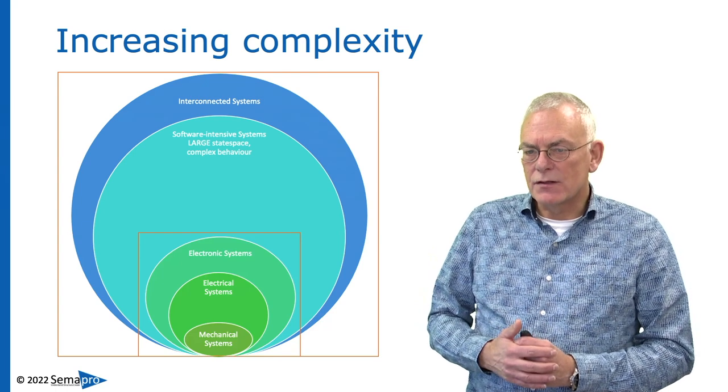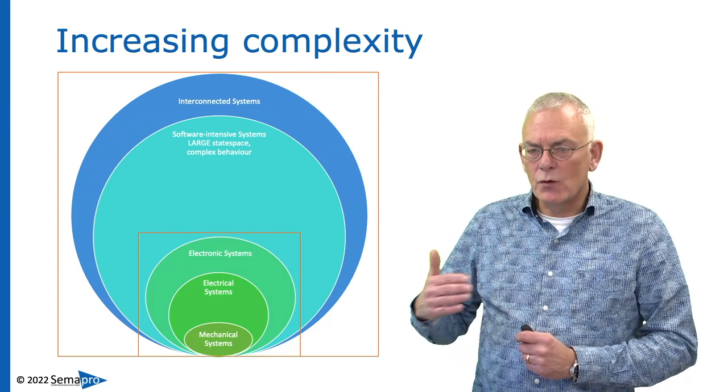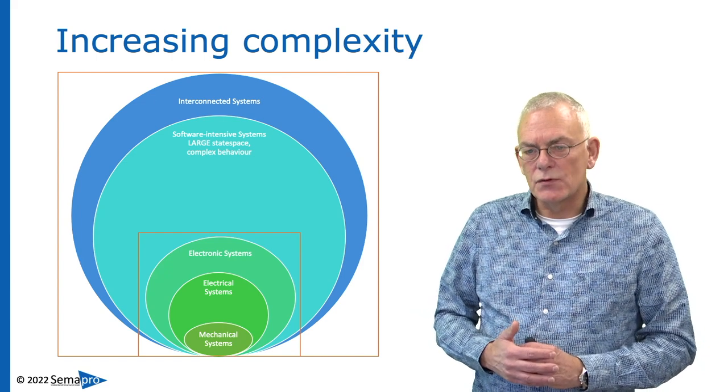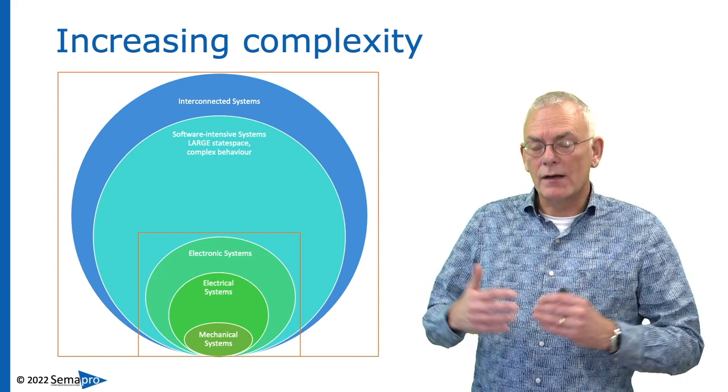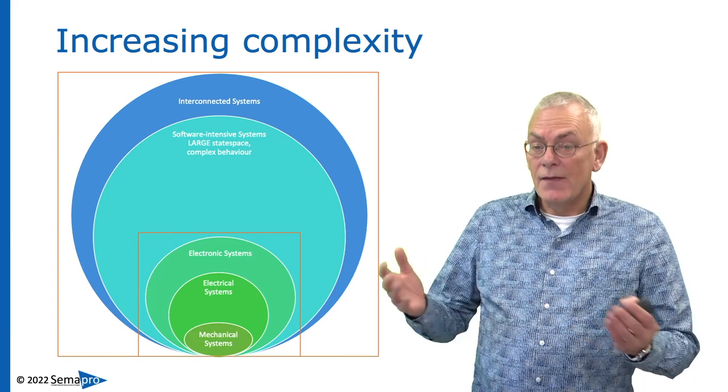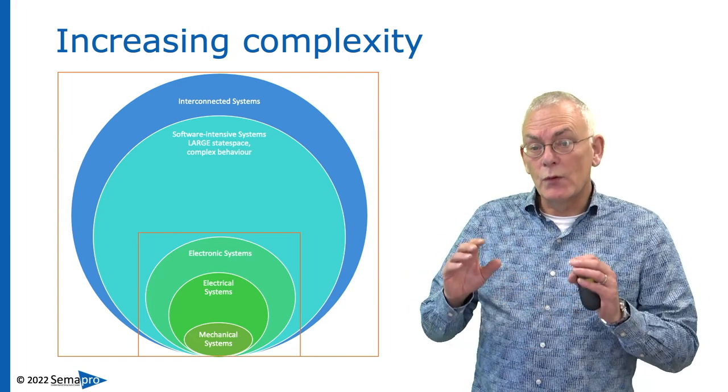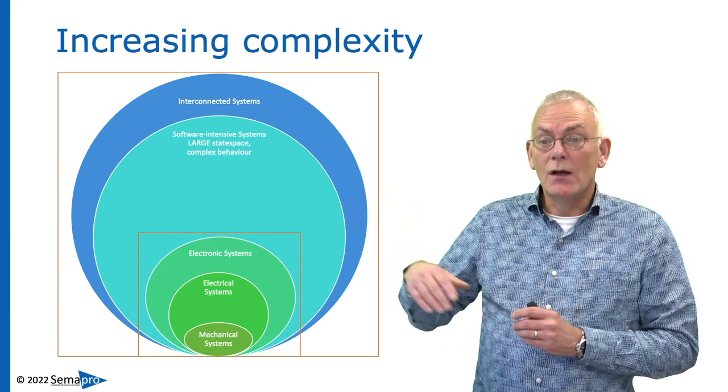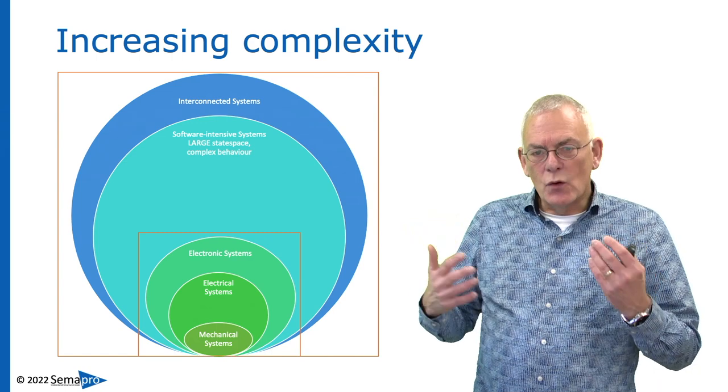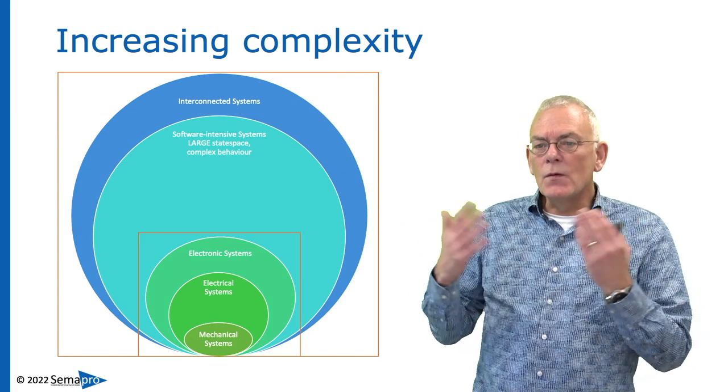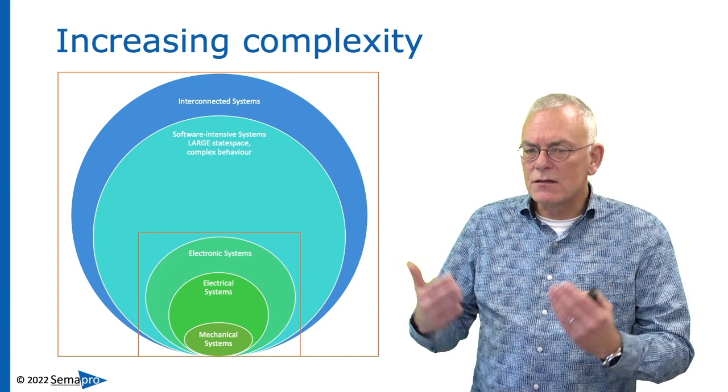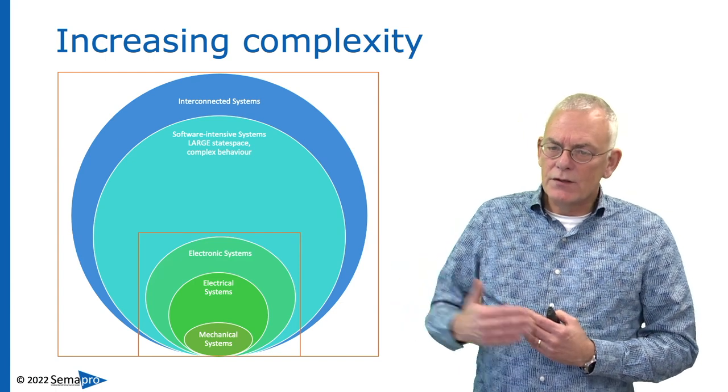Nowadays, most systems are software intensive. That means that they exhibit very complex behavior, and if you combine these complex systems together, you get even more complex behavior, emerging behavior it's also called. And then, of course, if we have the system that is already very complex, we will connect it to the rest of the world, where other complex systems live, and then you can imagine that the complexity will increase beyond our mental capacity to understand. So we need additional tools to be able to design these systems.